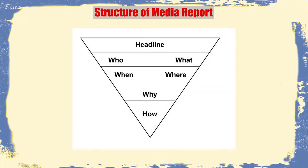The structure of a media report starts with the headline. Then there are the five W's and one H, which are very important when writing a report. The five W's are Who, What, When, Where, and Why — and the one H is How. You take any incident or event, put it through these five W's and one H, and you will have a substantial amount of content to write.